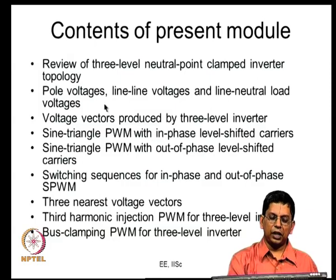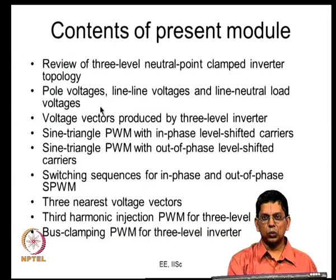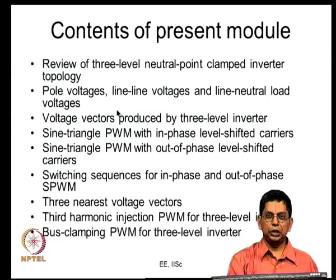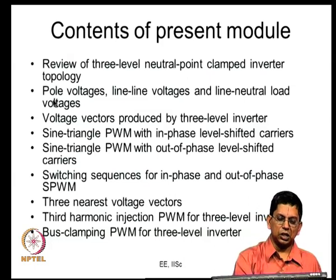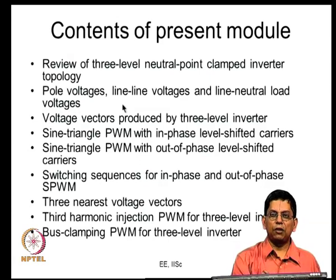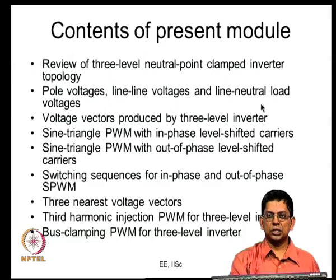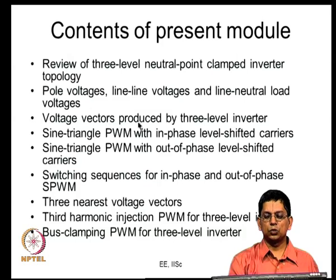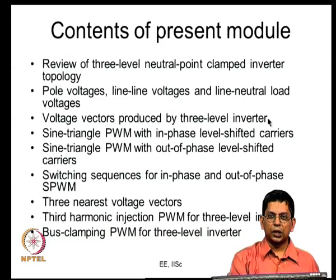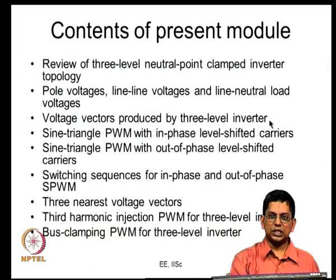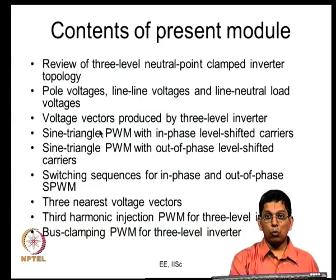Voltage vectors are produced by 27 inverter states. Once you understand the two-level inverter, dealing with the three-level inverter is not a problem. In a two-level inverter we have 2³ = 8 inverter states; here we have 3³ = 27. The two-level inverter has 8 states producing 7 distinct vectors, while here 27 states produce 19 distinct vectors, meaning there is much more redundancy — more inverter states can produce the same voltage vector.